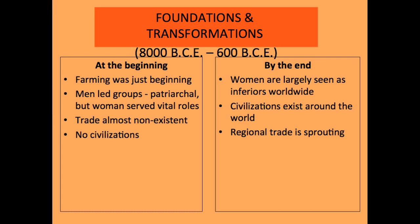In Foundations and Transformations, going back to about 8,000 BCE, farming was just beginning. At this time you still had a lot of nomadic clans and a lot of migration taking place. Groups were patriarchal — men led — but women still served vital roles. Prior to 8,000 BCE we see a lot of Mother Goddess figures, like the Venus of Willendorf. As settling began to take place, society transitioned to more patriarchal roles. Trade was almost non-existent because you're still dealing with small clans, and there were no civilizations set up as of 8,000 BCE.